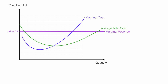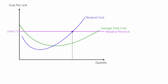The individual supplier will produce where marginal revenue equals marginal cost — MC equals MR. This is where profits are maximized. This supplier will produce a quantity of 20. Drawing straight up and across to the left, I get a green line showing a cost of 7.